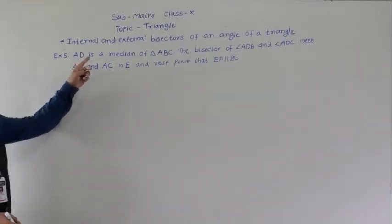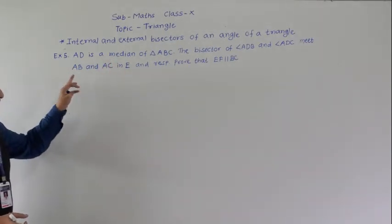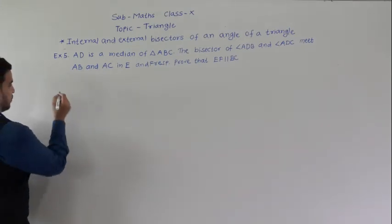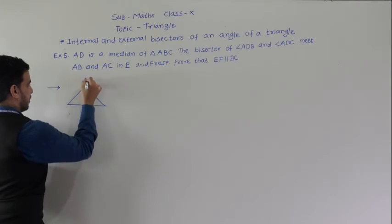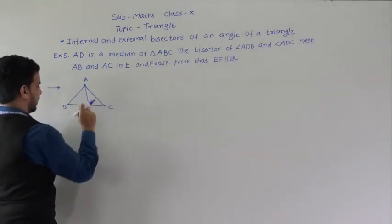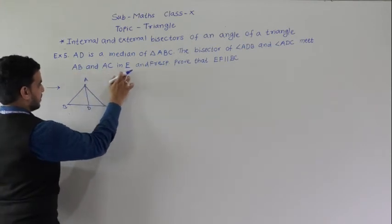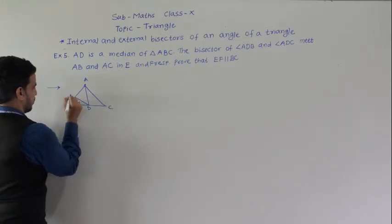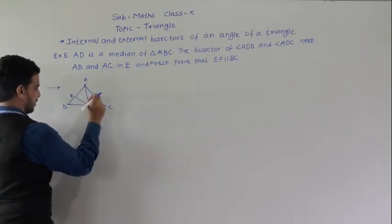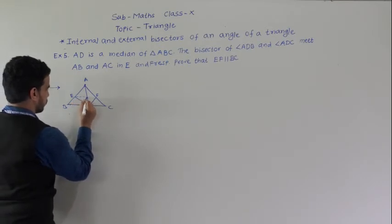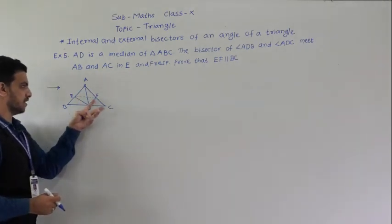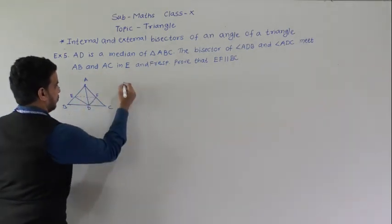Fifth example: AD is a median of triangle ABC. The bisectors of angle ADB and angle ADC meet AB and AC at E and F respectively. We have to prove that EF is parallel to BC. We draw triangle ABC with median AD, and bisectors DE and DF meeting AB at E and AC at F.